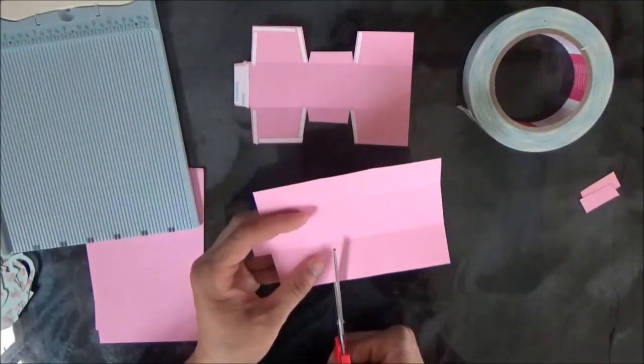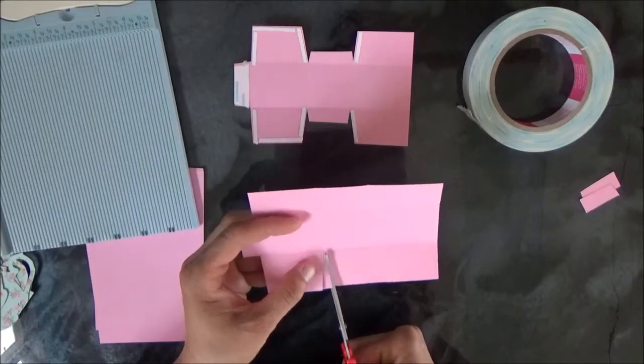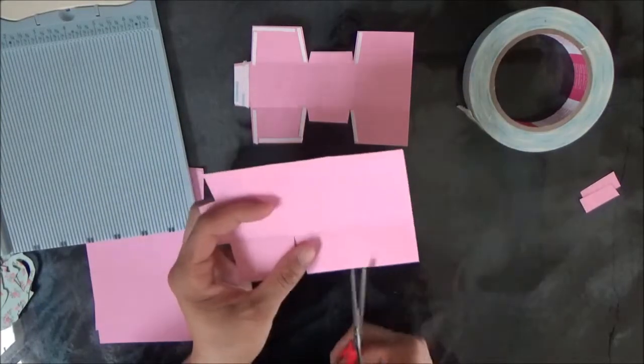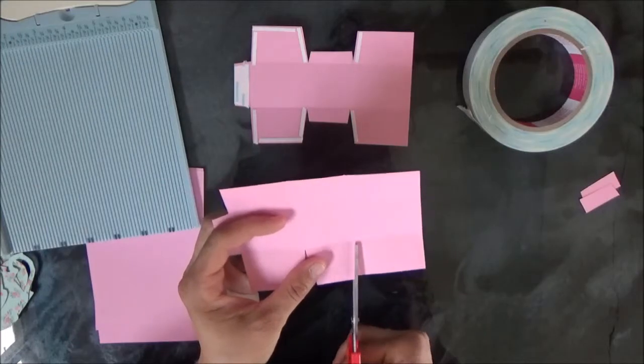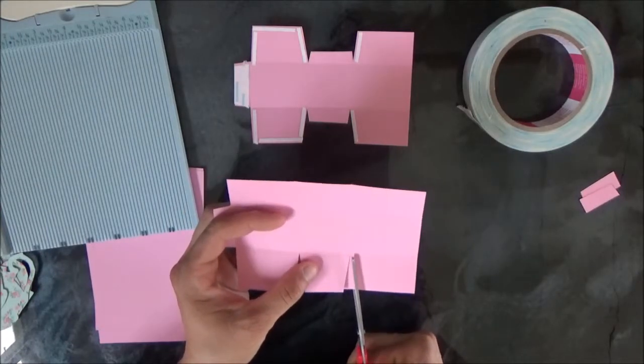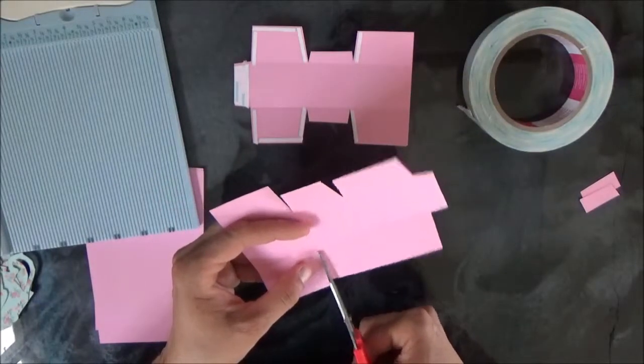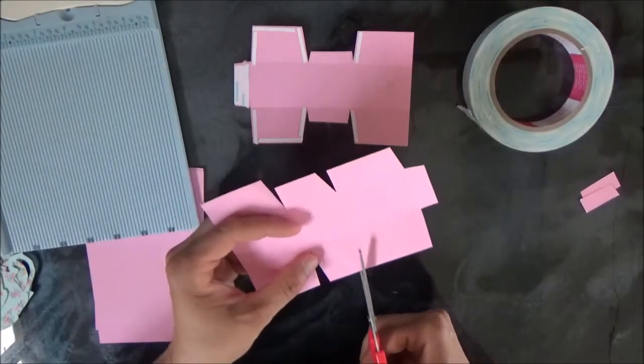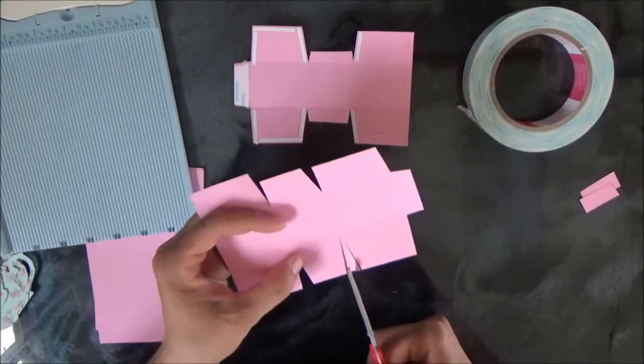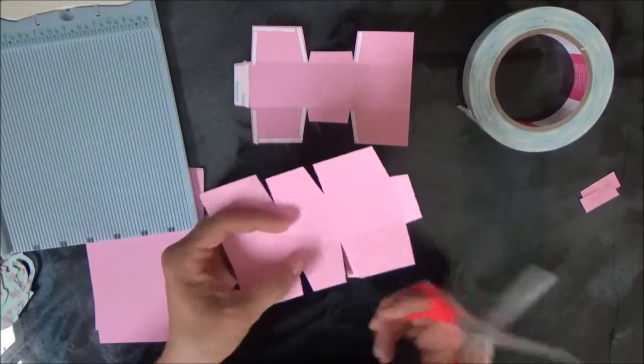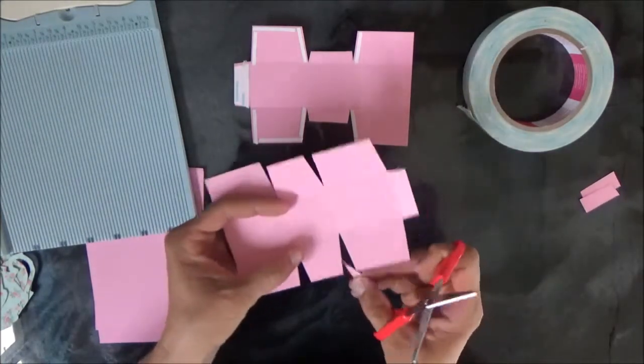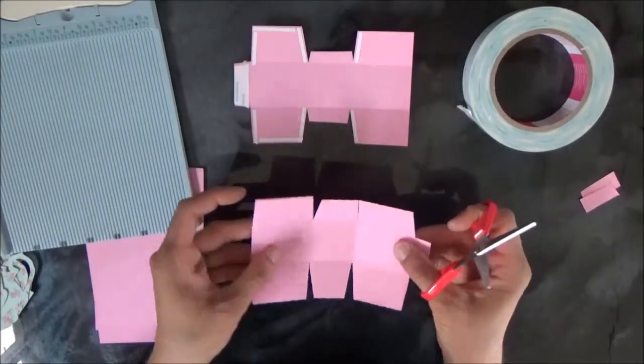Then what we're going to do is cut in on the other score lines, and this is important because our box is a small treat box. So any extra bulk that you can get out of the way, the better. That way it folds up a little bit better. So this is not exact by any means, but you're just cutting in at an angle on those score lines and cutting those score lines out.